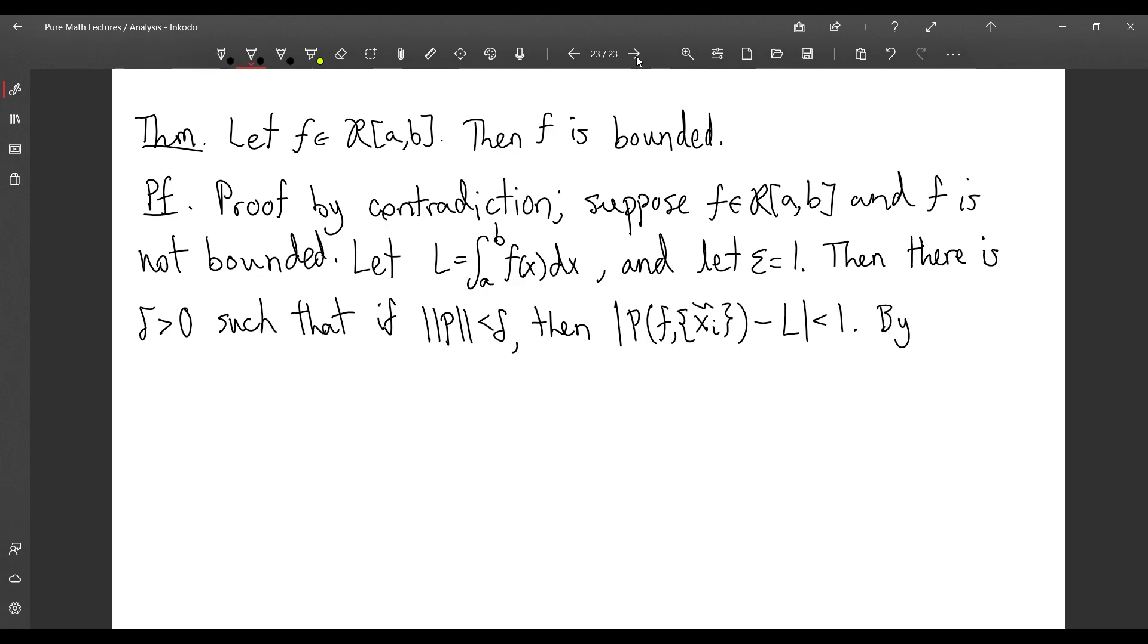we know that the Riemann sum regardless of evaluation minus L is going to be less than epsilon which we've chosen to be 1. By the triangle inequality, we have that we can sort of move the L to the other side. We have that the absolute value of the Riemann sum is less than the absolute value of L plus 1.